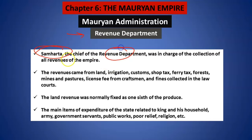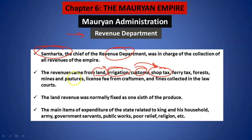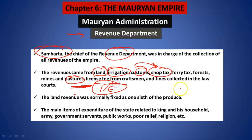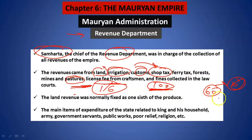Revenue aata tha zameen se, irrigation se, customs se, forest se — for everything there was a tax that was collected. The land revenue was fixed at one-sixth of the produce. Agar aapki aamdani 100 rupay hoti hai, toh iska one-sixth aapko dena padega. Ya agar mein 60 rupees bolun, toh aapko us mein se 10 rupay dene padenge.